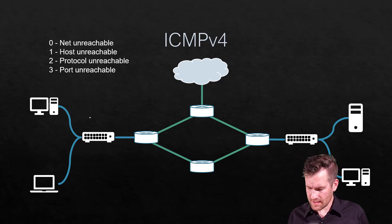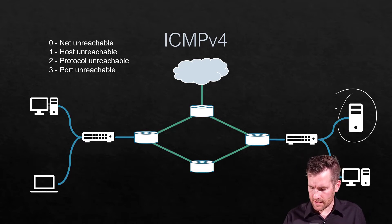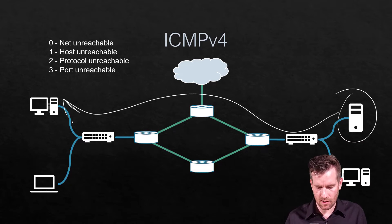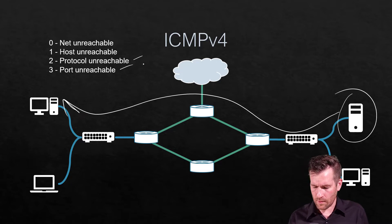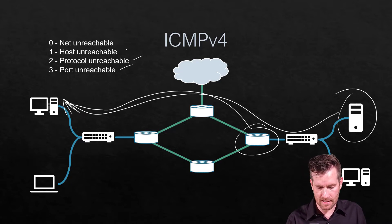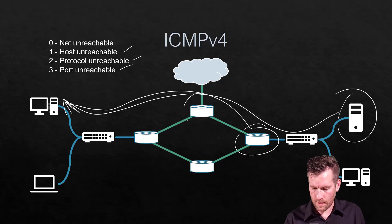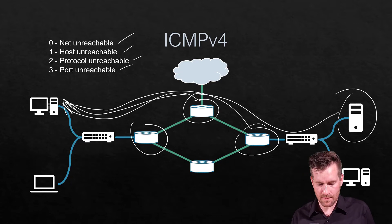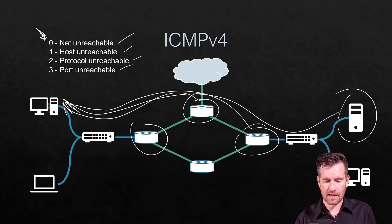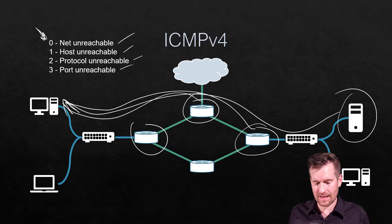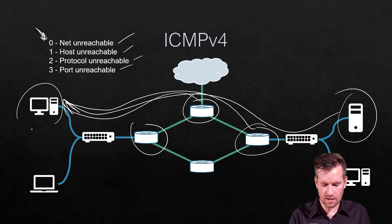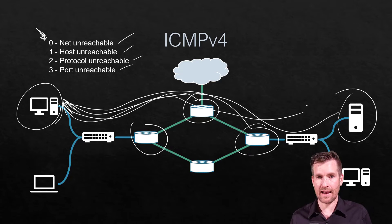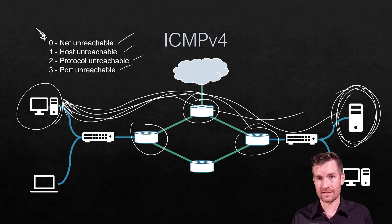There are several different messages that can return back. For instance, this machine may send back that there is a protocol unreachable or the port is unreachable. Or maybe the router sends back that the host is unreachable, or maybe one of these machines says that the network is unreachable. There are types included within the information being sent back so that this machine knows why it's not receiving an echo reply.